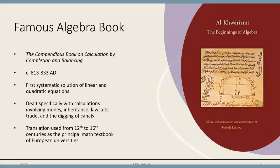Al-Khwarizmi's groundbreaking book, The Compendious Book on Calculation and Balancing, provided the first systematic solution of linear and quadratic equations. Translations of this work were used from the 12th to 16th centuries as the principal mathematics textbook of European universities.